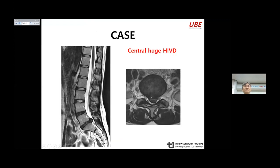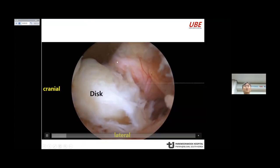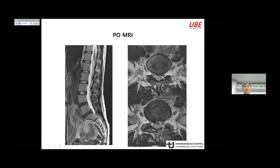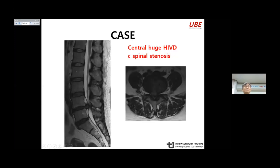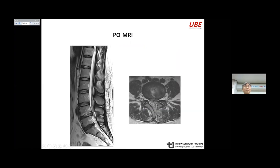This case is a central huge disc herniation. In the endoscopic view, this is the nerve root and the ligamentum flavum. You can see the large disc. Post-op MRI shows complete removal of the disc. I try to spare the ligamentum flavum as much as possible. This next case is a central huge disc herniation combined with central stenosis. First, ULBD is performed, and then discectomy is done. Post-op MRI shows the ULBD and discectomy result.